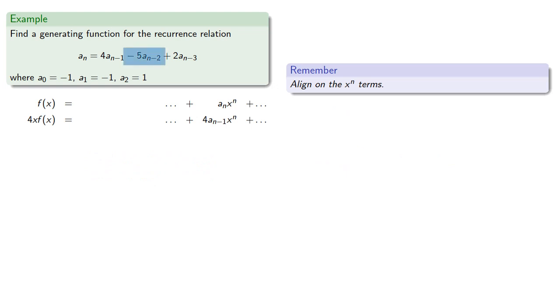Our recurrence relation has a minus 5a_{n-2}, and we want minus 5a_{n-2} x^n. So in our power series, we have a_{n-2} x^{n-2}, and so we want to multiply our function by minus 5x squared.